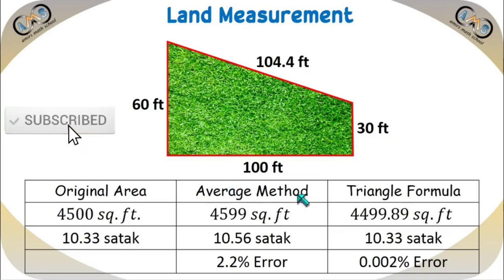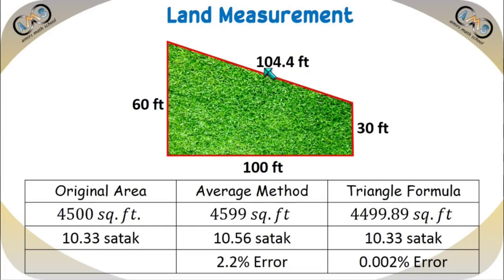Now if we apply the average method — the traditional method of finding the area of land — we take the average of the two opposite sides and the average of the other two opposite sides, then multiply those two average values. This gives 4599 square feet, which is greater than the original value of 4500, giving 10.56 shotok.